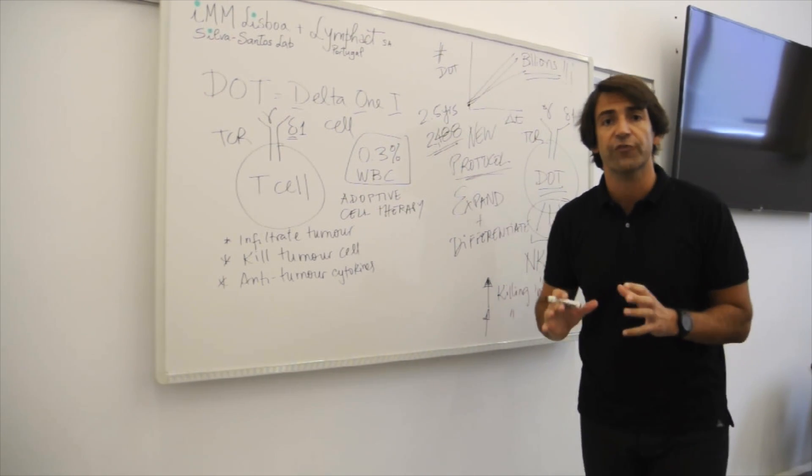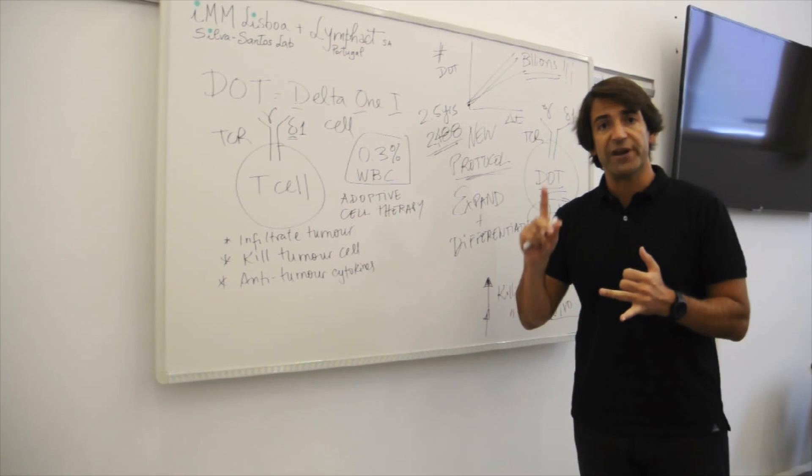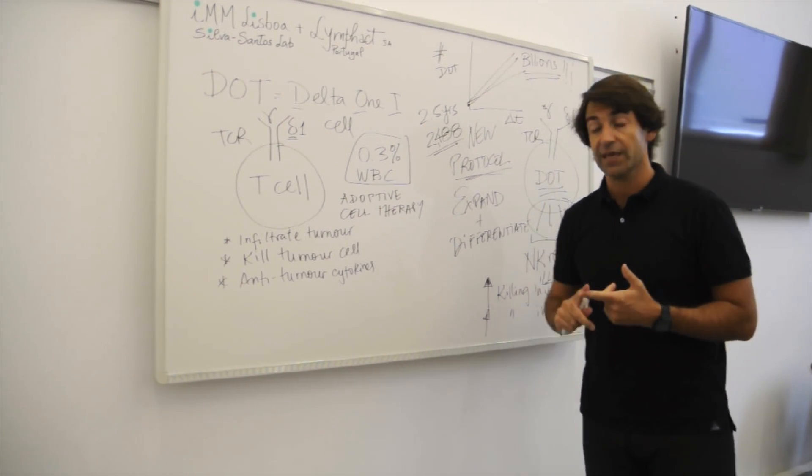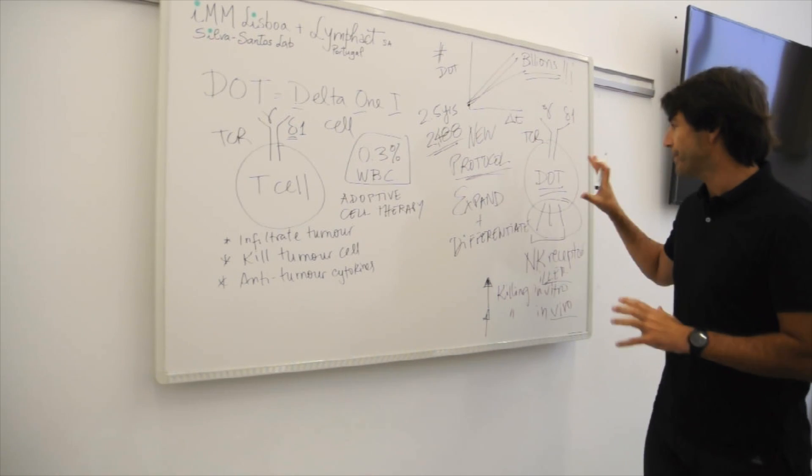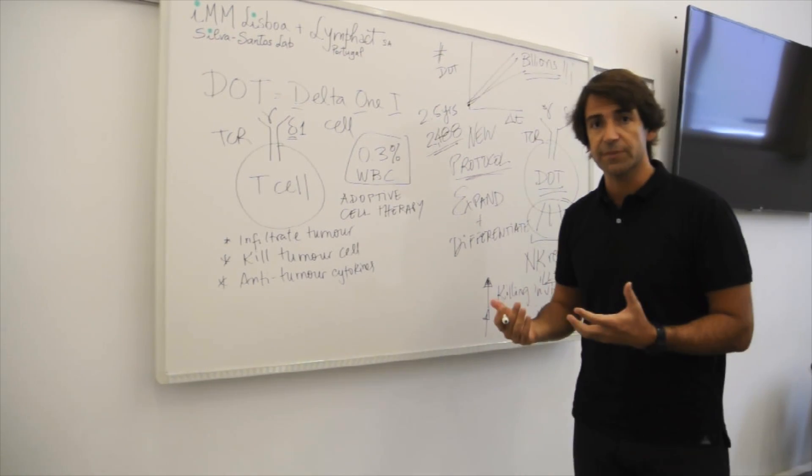And so this prevents leukemia from establishing in the bone marrow, spreading to liver, spleen, lung, etc. So this is really the proof of concept for application of these cells in cancer immunotherapy.